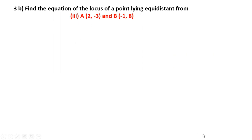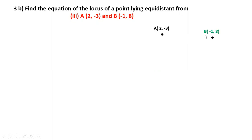You need to make a diagram of the equation. This equation involves two points: the first point is (2, -3) and the other point is (-1, 8). So point A is equal to (2, -3) and point B is (-1, 8). Now we have to find the distance. We have to assume a point P.